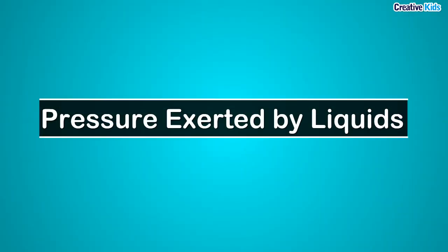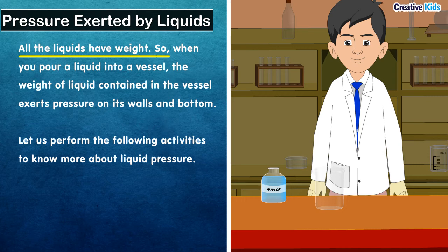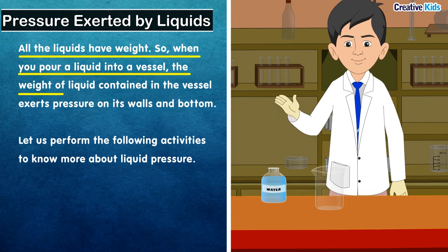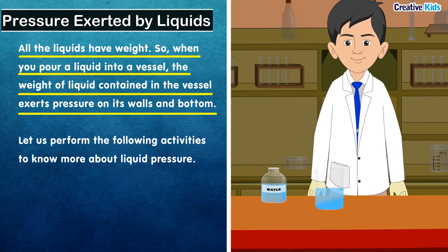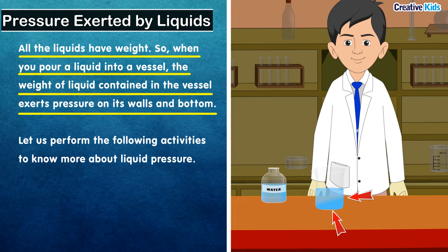Let us now discuss the pressure exerted by liquids. Till now we discussed pressure exerted by solids. All liquids have weight, so when you pour a liquid into a vessel — for example, water in a beaker — the weight of the liquid exerts pressure on its walls and also on the bottom. This pressure is called liquid pressure.